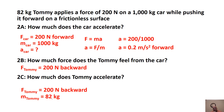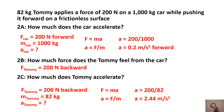Tommy has a mass of 82 kilograms and we're solving for his acceleration. Using Newton's second law for Tommy alone: a = 200/82 = 2.44 meters per second squared backwards. 'Backwards' is the perfect way to describe that reverse direction.